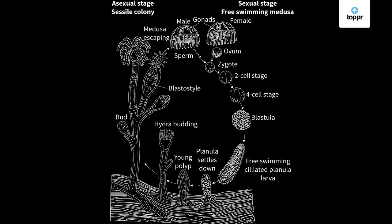Following fertilization, the zygote forms a ciliated larva called planula. This larva is formed through divisions — two-cell stage, four-cell stage, then blastula formation leading to planula larva. The planula larva can swim, then settles down and grows into a sessile polyp. The polyps reproduce asexually by budding, whereas medusa liberate gametes sexually. Both asexual and sexual forms are diploid and the haploid cells are gametes.